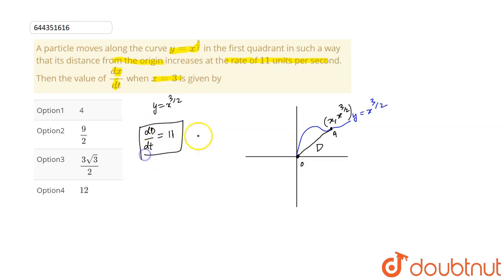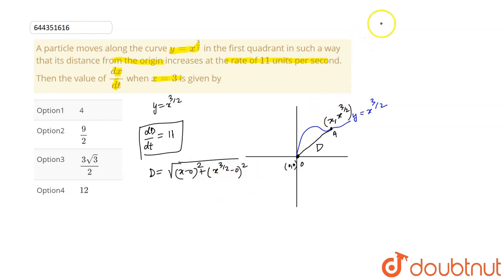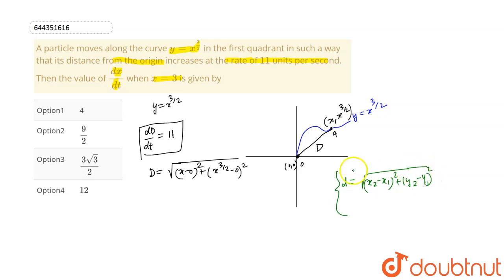Now our distance D equals the square root of (x - 0)² + (x^(3/2) - 0)², using the distance formula √[(x₂ - x₁)² + (y₂ - y₁)²]. This simplifies because (3/2) × 2 = 3, giving x³. So squaring both sides: D² = x² + x³.